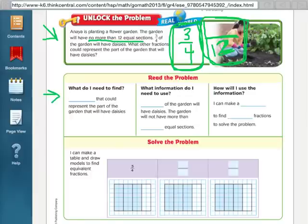So let's just fill in this section. What do I need to find? Well, I need to find fractions. I'm writing equivalent fractions. Fractions. By the way, if you're in my class, you should be filling out this graphic organizer. It is on page 243 of your big math book. So I need to find fractions that could represent the part of the garden that has daisies.